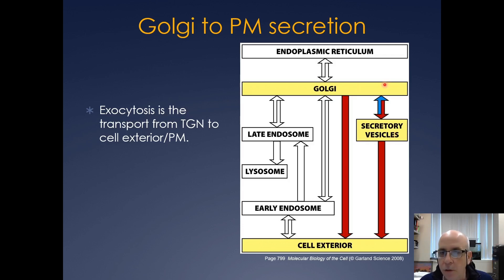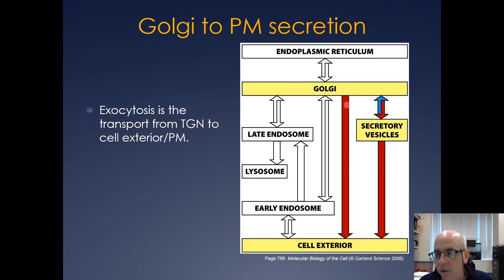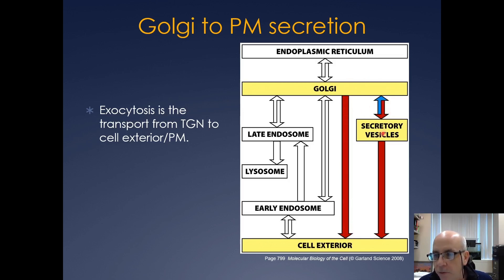So now we're going to look at exocytosis — basically going from the Golgi to the cell exterior. It can go in two main pathways: you can just have a default pathway going right from the Golgi to the cell exterior, or you can generate secretory vesicles that have secreted proteins in them and can get concentrated.